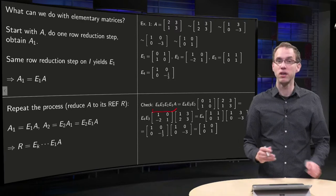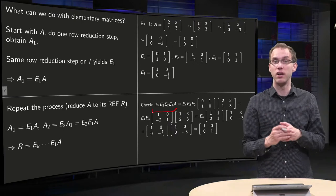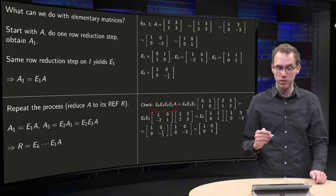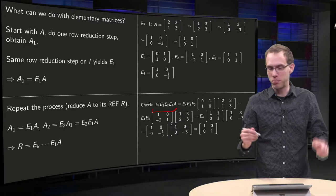So this should give us the row-reduced echelon form of A. We know it is the identity matrix. Well, let's check to make sure.